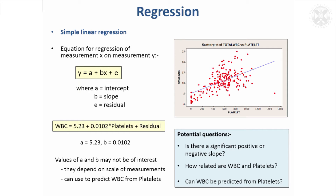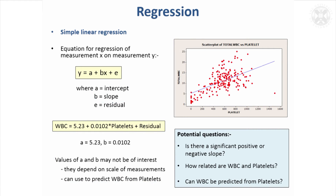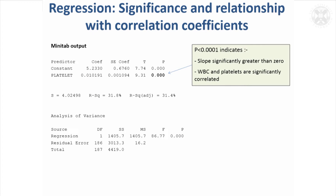Usually the values of 'a' and 'b' — called the intercept and the slope — are not of particular interest, but we could use this to predict white blood cell count from platelets if we wanted to. To show an example of some statistical output from a package, here is the Minitab output.